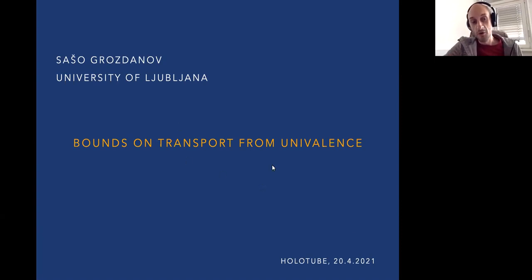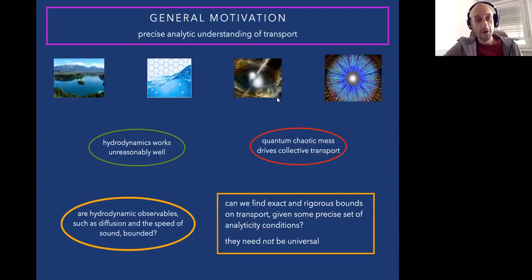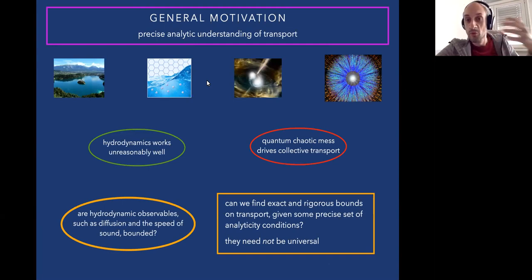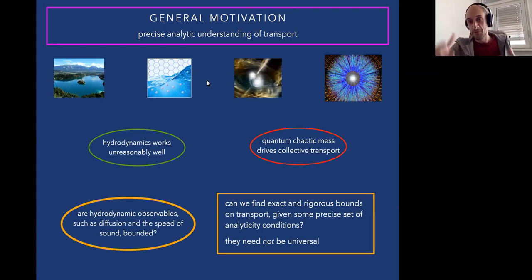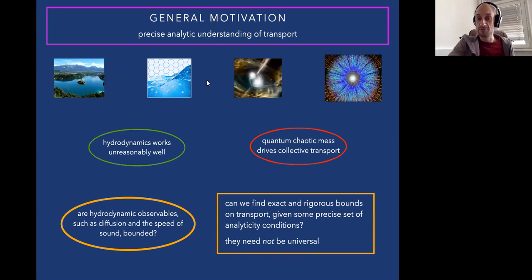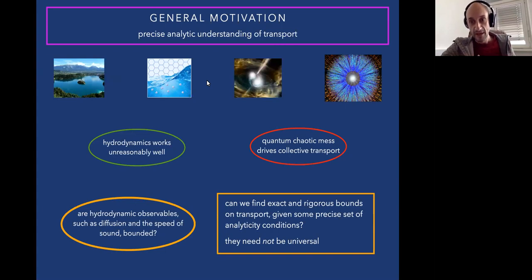The title of my talk today is 'Bounds on Transport from Univalence.' The main motivation is to develop a precise analytic understanding of various aspects of transport. This is an audience to which I don't have to introduce the value of studying transport in strongly interacting quantum field theories. This holography and hydrodynamic description of transport has been very valuable — for describing fluids, gases, electrons in graphene, neutron stars, and quark-gluon plasma.